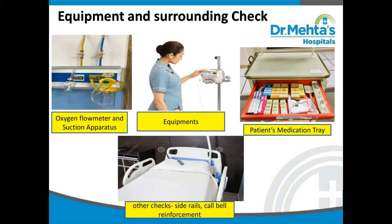After completing patient assessment, check the equipment and patient surroundings. Check the function of the oxygen flow meter and suction apparatus, then note down in the checklist. Check other equipment like syringe pumps and infusion pumps, and remove any unwanted equipment. Then check the patient's medication tray, note down the medications available, and arrange the tray neatly. Also do other checks like side rails, call bell, etc.